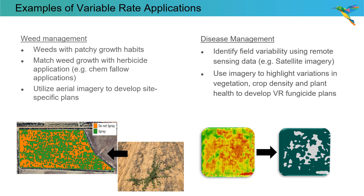With disease management, we can identify field variability using remote sensing data such as satellite imagery. We can use that imagery to highlight variations in vegetation, crop density, and plant health to develop a VR fungicide plan. We can match low production areas with a low or zero fungicide rate, whereas we could apply standard or higher rates of fungicide products to those higher producing areas.